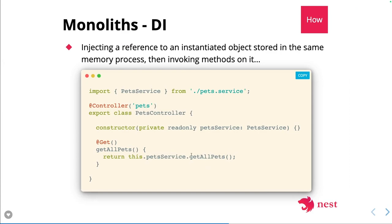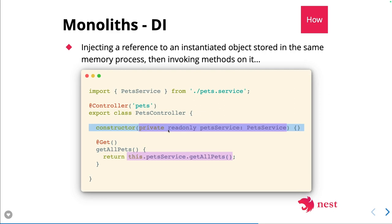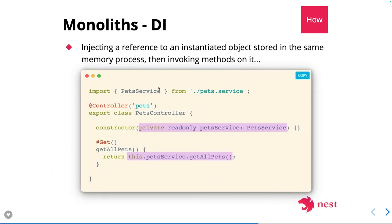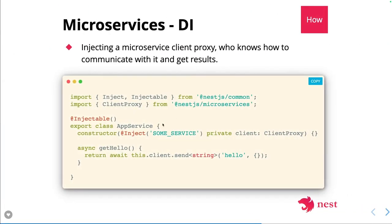Here's how you create a controller: pets uses HTTP GET and calls pet service dot get all pets. You can define controllers — pets controller, contact controller, image controller, analytics controller — and these controllers talk to their respective services. These services can be independent NestJS microservices running somewhere, and you communicate with them through TCP, Redis, Kafka, RabbitMQ, and others.